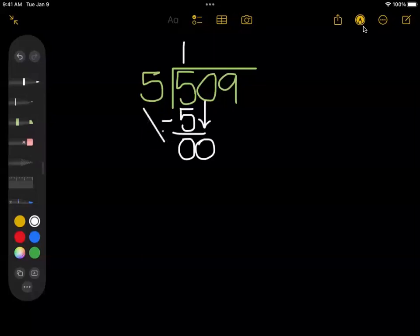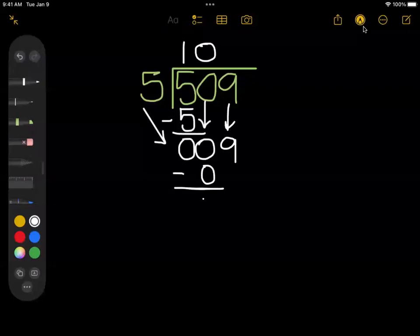5 fit into zero zero times, so I must put a zero above that space in the answer. Now I could go ahead and bring down that 9 and try to divide that, or if I wanted to I could do 0 times 5 is 0, subtract that, get zero, and then bring the 9 all the way down.